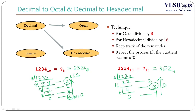In summary, whenever we convert a decimal number to any number system, the technique is to divide the number by the base of the target system. For octal we divided by 8; for hexadecimal we divided by 16. Whatever base the number system has, divide the decimal number by that base value.